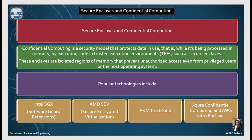Confidential computing is a security model that protects data in use — that is, while it is being processed in memory — by executing code in Trusted Execution Environments (TEEs) such as secure enclaves. These enclaves are isolated regions of memory that prevent unauthorized access even from privileged users or the host operating system. Popular technologies include Intel SGX, AMD SEV, ARM TrustZone, Azure Confidential Computing and AWS Nitro Enclaves.